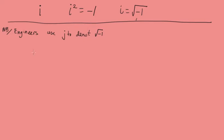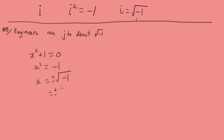Let's consider the equation x squared plus 1 equals 0. Solving it: x squared equals minus 1. We'd normally say that has no solution, but now we can get a solution because i is the square root of minus 1, so x equals plus or minus i.